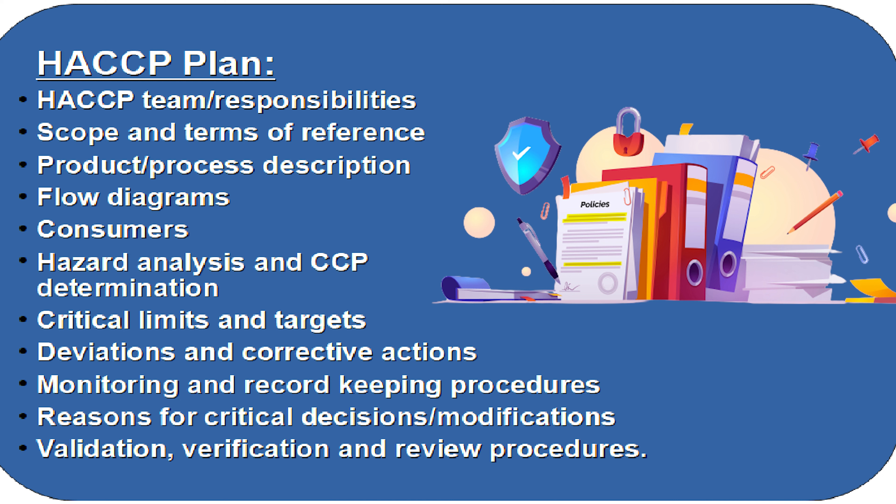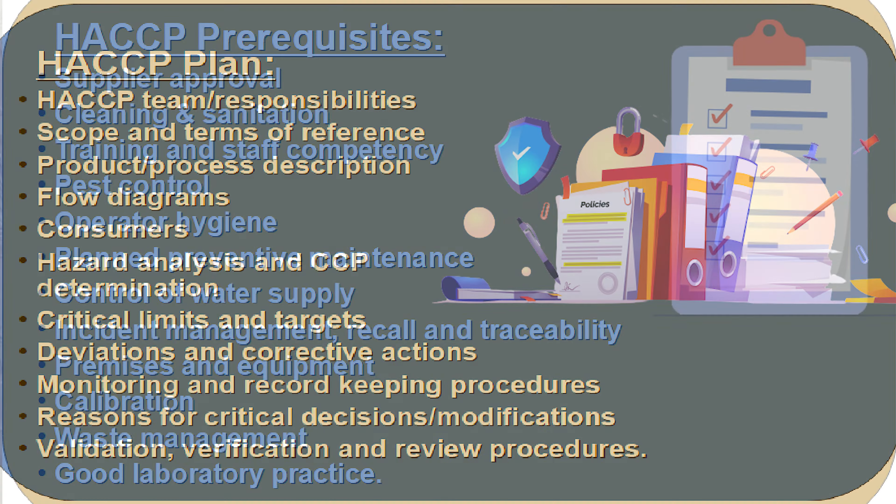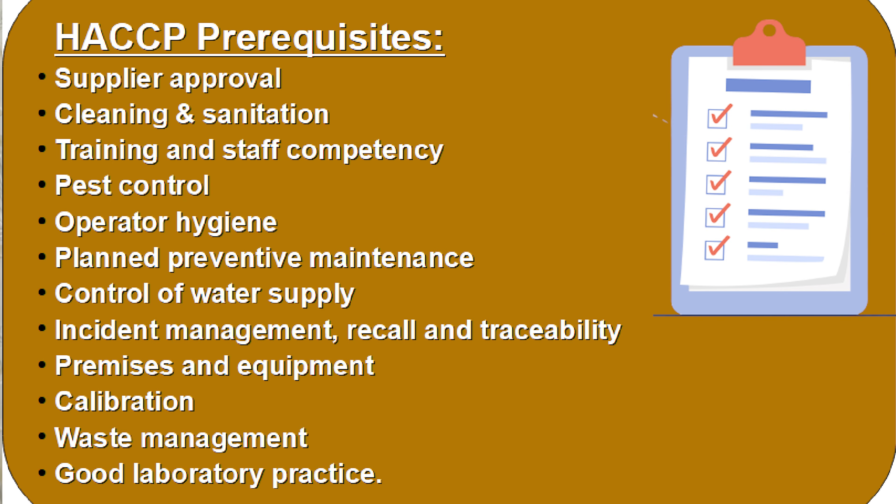If you look at this list carefully, these are the 12 steps of HACCP. All the details of the 12 steps of HACCP need to be maintained within the HACCP plan. That's the first document which should be there for any HACCP study, and you can also call it the HACCP manual.